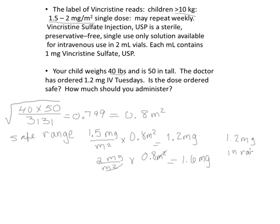The 1.2 milligrams to 1.6 milligrams is the safe range for this particular child. The order is 1.2 milligrams, and that is in the range. Below the range may not be therapeutic, and above the range may be an overdose, so we always want our orders to be in the calculated range — and that is the case here. We can answer the first question: is the ordered dose safe? Yes. We have calculated the safe range of 1.2 to 1.6 milligrams, and our order is at the lower end of that range.